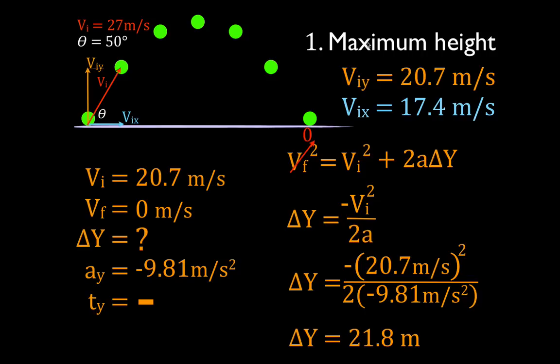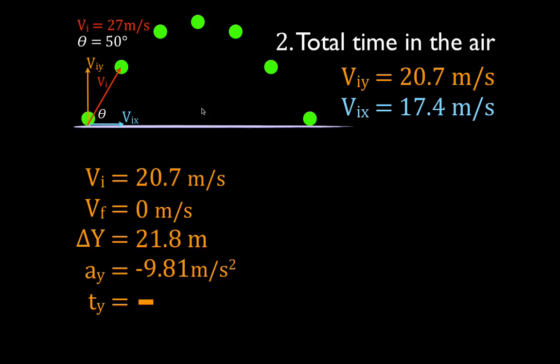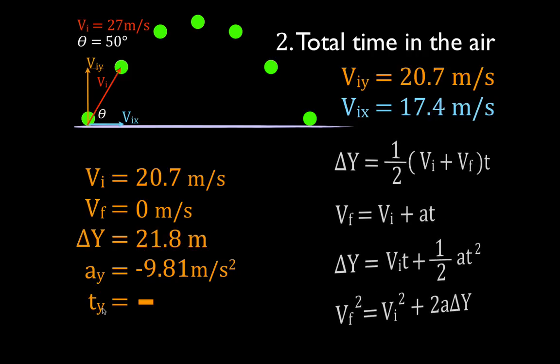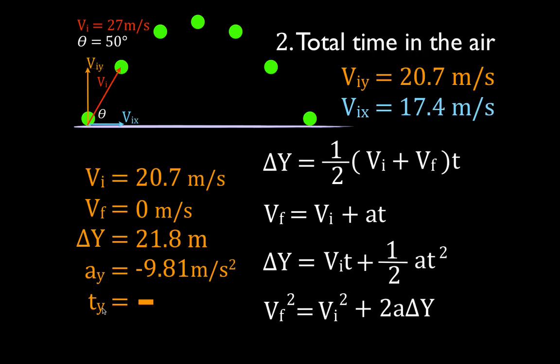That's the maximum height — 21.8 meters. Step 2: we're going to figure out the total time the object is in the air. Once again, we're going to use our y values to do this — we can't use our x values, we don't have enough information. Initial velocity, final velocity, change of position, acceleration — this time we're going to find time. We need to find the time using our kinematic equations.